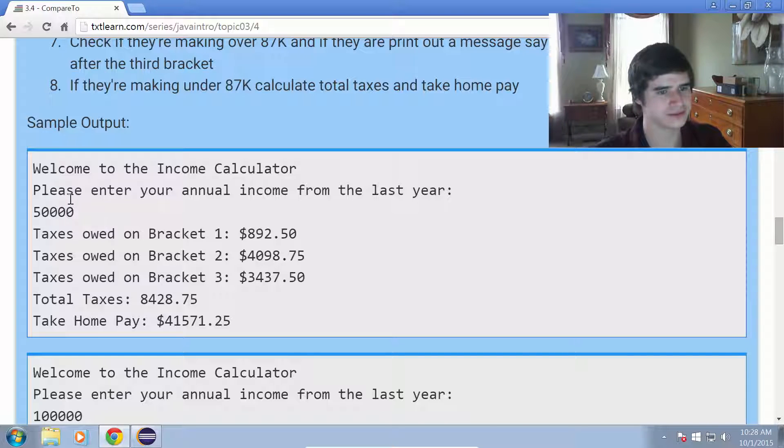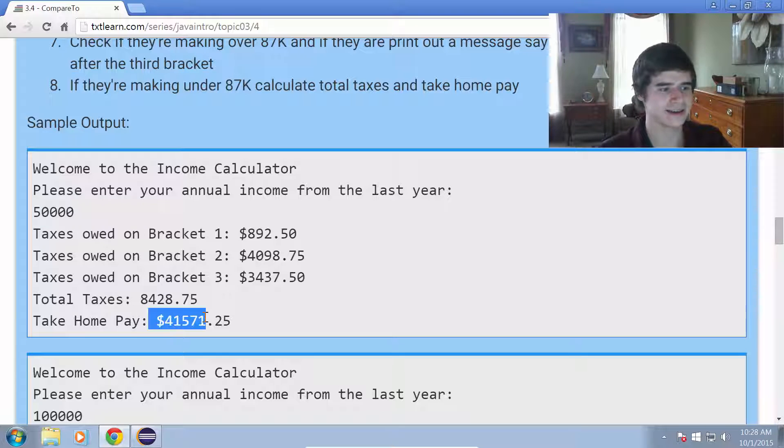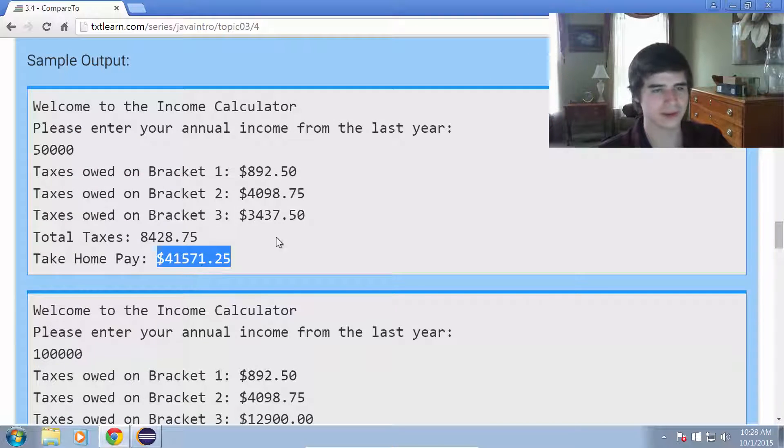Please enter your annual income from the last year. So let's say someone puts in the number 50,000, so that means they made $50,000 in the year. And then it calculates, okay, you owe $892.50 in tax bracket one, $4,000 in bracket two, and $3,400 in bracket three. Then it adds all those up. So the total taxes is $8,400. Then it subtracts the total taxes from the total income. And it prints out the take-home pay, which in this case would be $41,000.